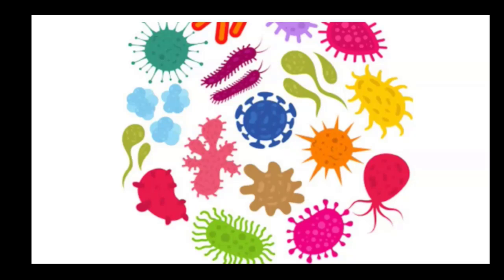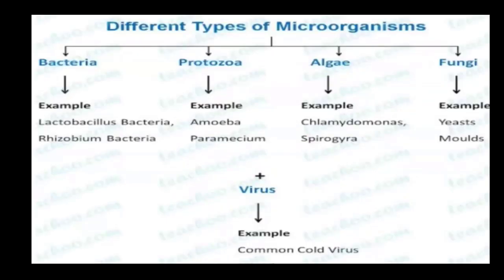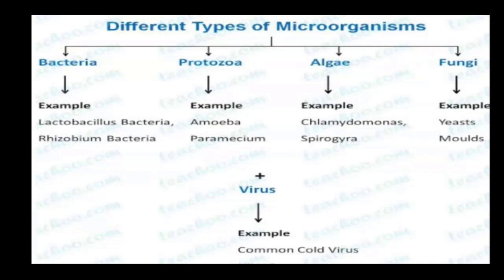In this video we will see different types of microorganisms in detail. The five types are: bacteria, protozoa, algae, fungi, and virus. In your book there are four types listed, but these are the five main types of microorganisms. When you go to higher classes, you will also study more. In your book there are bacteria, protozoa, fungi, and virus, and algae are also a type of microorganism.